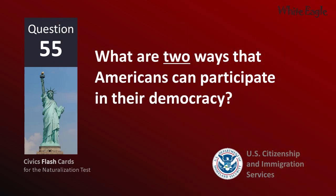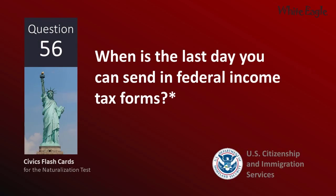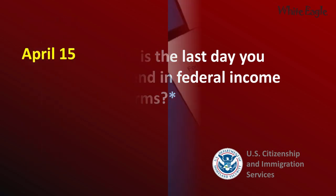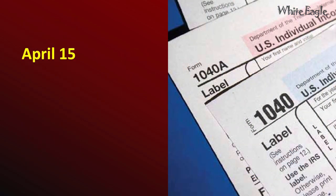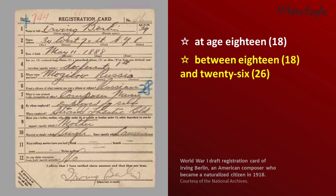What are two ways that Americans can participate in their democracy? Vote. Join a political party. When is the last day you can send in federal income tax forms? April 15th. When must all men register for the Selective Service? Between 18 and 26.